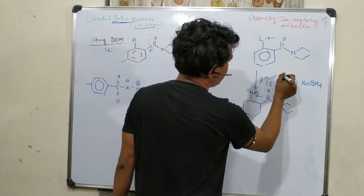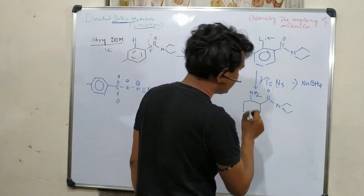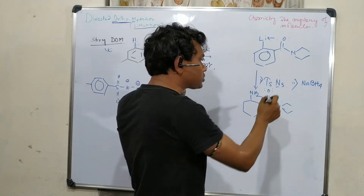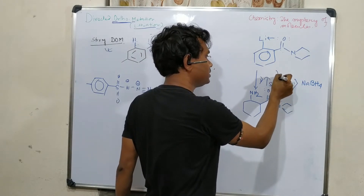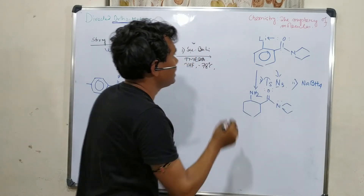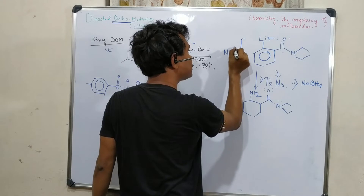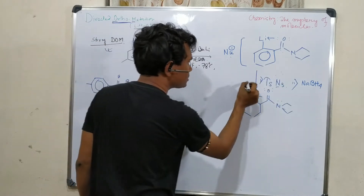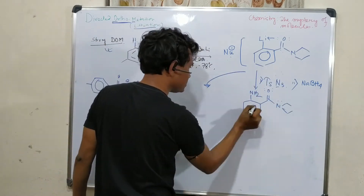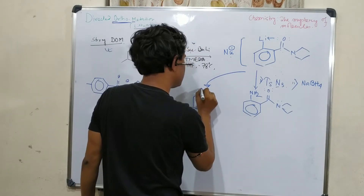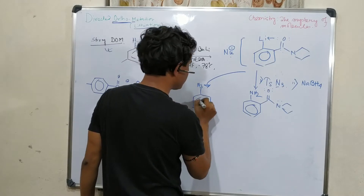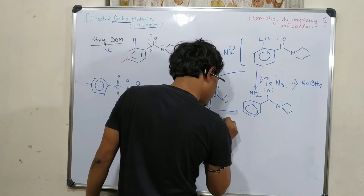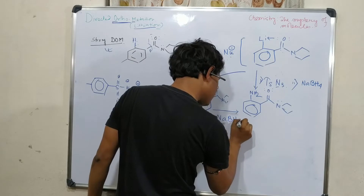This reaction is nothing but aromatic electrophilic amination — electrophilic attack happens on the aryllithium, which is a nucleophile. It will attack the electrophilic nitrogen center of tosyl azide and produce the azide intermediate. This azide is subsequently reduced by NaBH4 to produce the amine product.